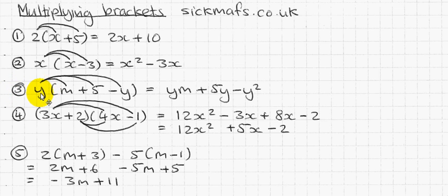This is another example. The thing outside times each thing inside. We've got three things inside the bracket now. We've got an m and a five and a minus y. So y times m is ym. Y times five is 5y. And y times minus y is minus y squared.